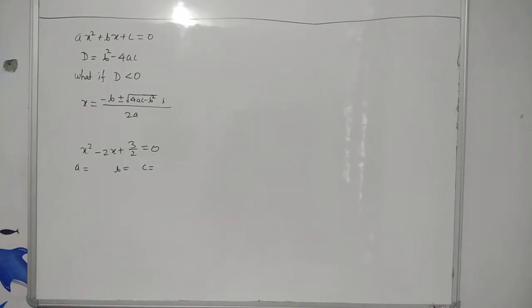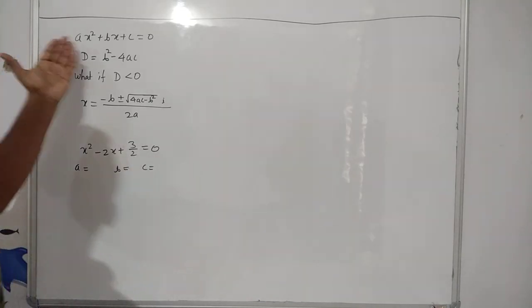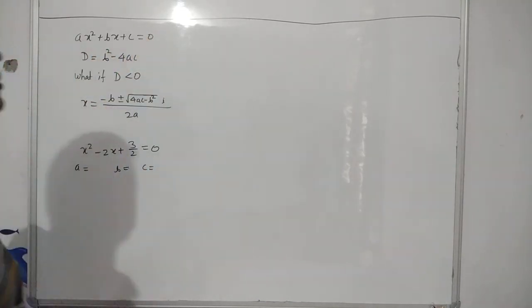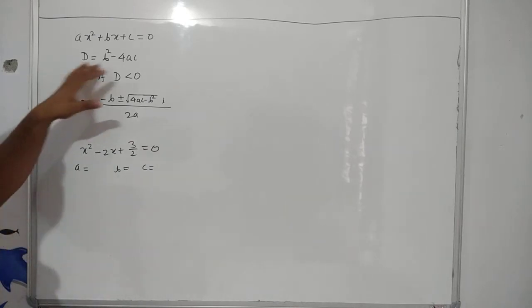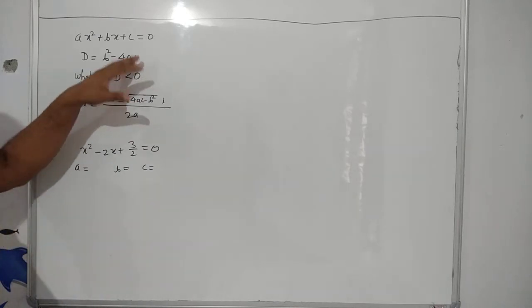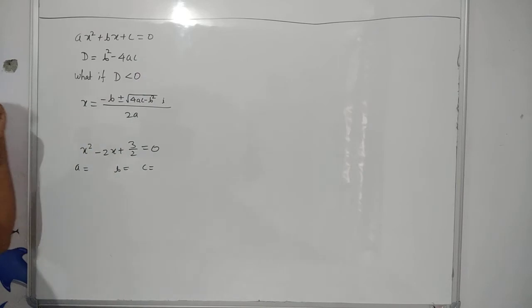Dear friends, now proceed further. It is well known. We have to evaluate x square plus bx plus c equals to 0. This is a quadratic equation. And we have to evaluate d equals to b square minus 4ac. And we have to evaluate this.